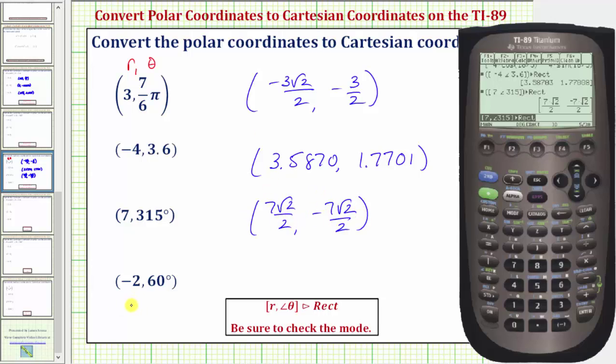For our last example, let's edit the previous entry, so press the right arrow. Let's first change R, which is negative two, so delete, negative two. Right arrow to the right of the five. Let's clear three hundred fifteen and enter sixty, and enter. The exact rectangular coordinates are negative one, comma, negative square root of three.